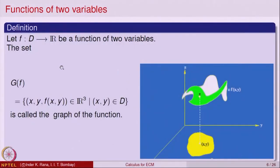Now one would like to know what is the graph of a function of two variables. For a function of one variable, f(x), the graph was a subset of the plane R². For a function of two variables, the graph is going to be a subset of R³, since for every (x, y) in the domain, we record the triple (x, y, f(x,y)) in three-dimensional space.